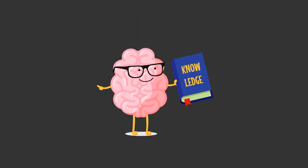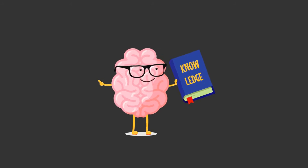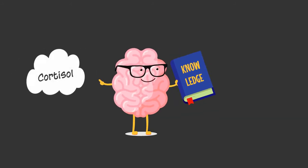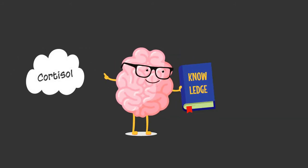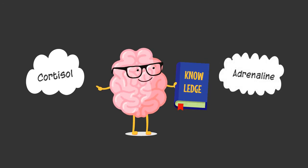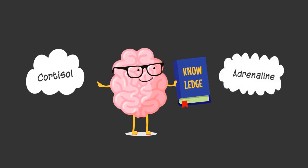Neuroscience has revealed that multitasking increases the production of the stress hormone cortisol, as well as the fight-or-flight hormone adrenaline. Both these hormones can overstimulate your brain, creating a dopamine-addiction feedback loop, causing mental fatigue, brain fog, and scrambled thinking.